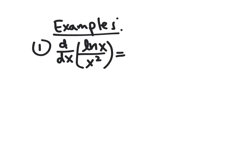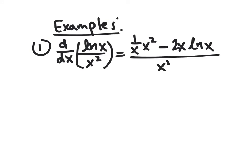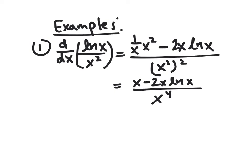Let's look at a couple of examples. First: the derivative of ln(x)/x². Using low d high: we take the derivative of the top times the original bottom, minus the derivative of the bottom times the original top, all over the original bottom squared. This gives [x·(1/x) − 2x·ln(x)] / x⁴, which simplifies to [x − 2x·ln(x)] / x⁴.